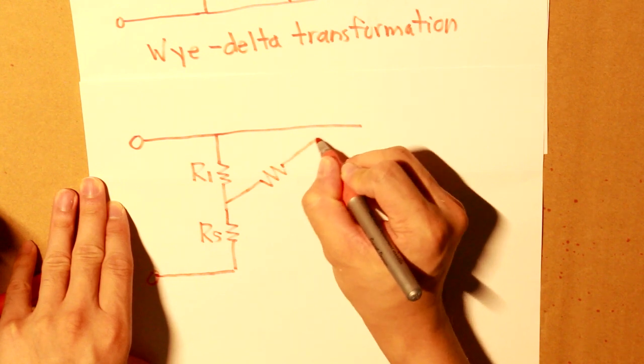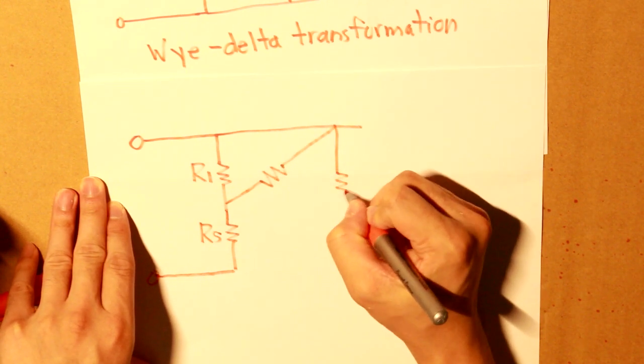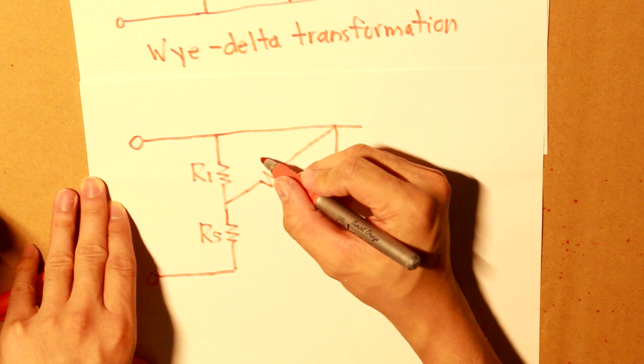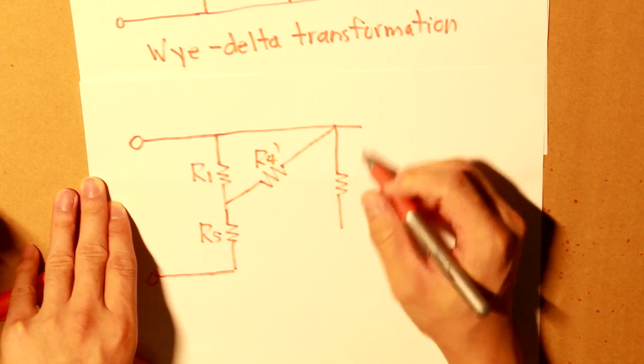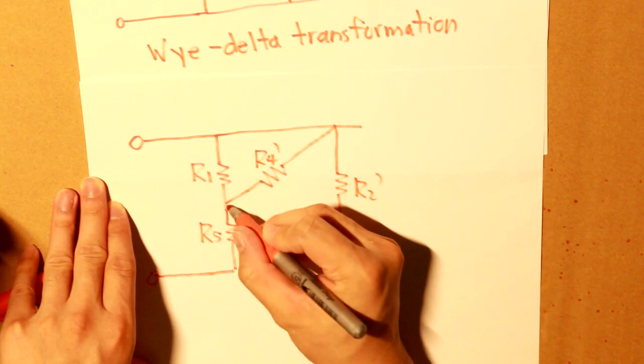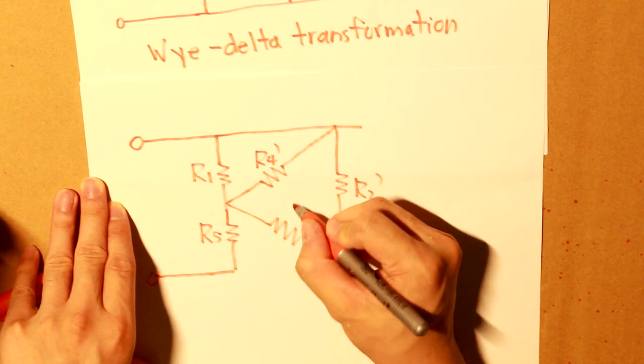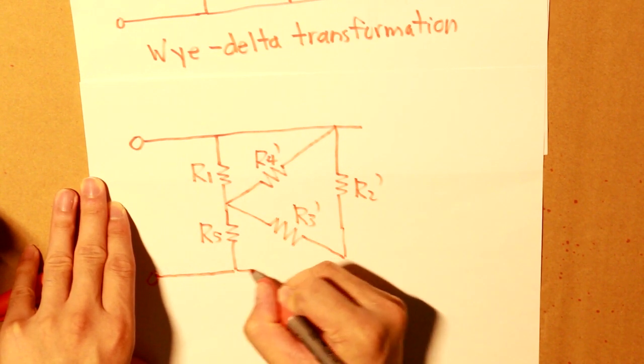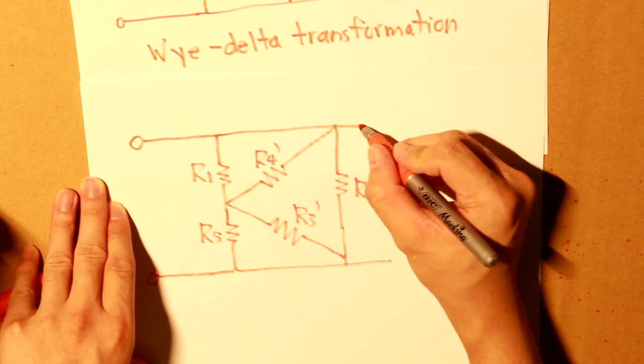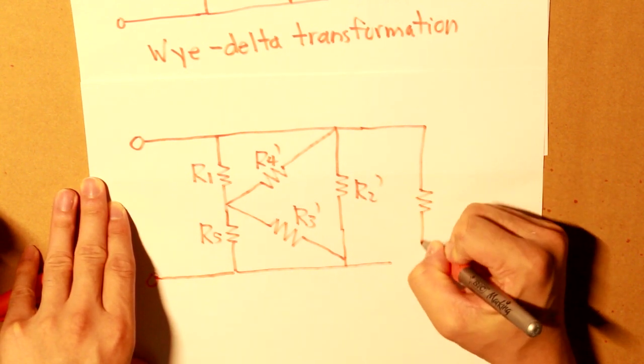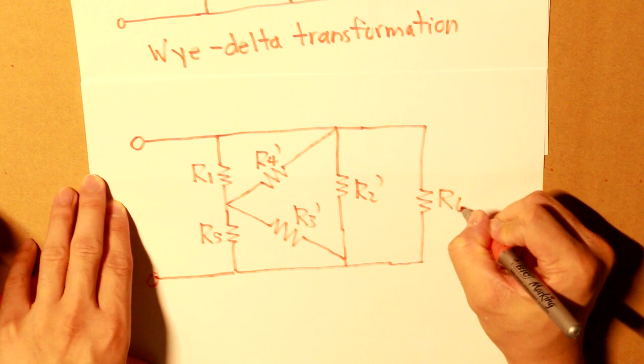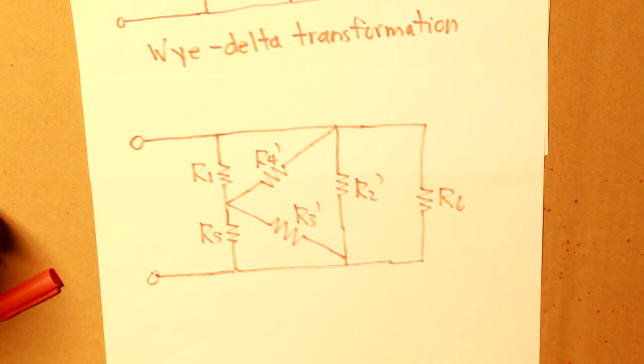And then our new formation would look like this. This is how our new resistor will look like when it's converted to Delta connection.